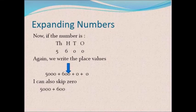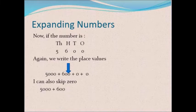If the number is 5600, we write the place value of each digit: 5000 + 600 + 0 + 0. I can skip the zeros and write 5000 + 600. It is not necessary to mention zero, but if you write 5000 + 600 + 0 + 0 it will also be considered correct.